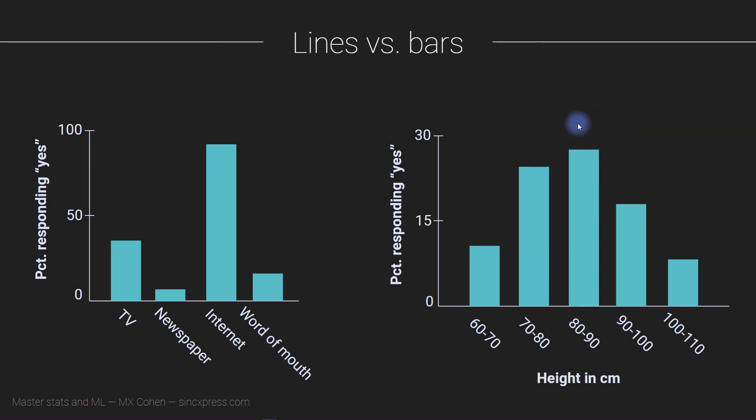I want to talk briefly about using lines instead of bars in these kinds of plots. Instead of drawing each bin as being a box that starts at zero and goes up to whatever height it has, you can imagine drawing a line that goes just from the top of that bar to the top of this bar to the top of this bar and so on.